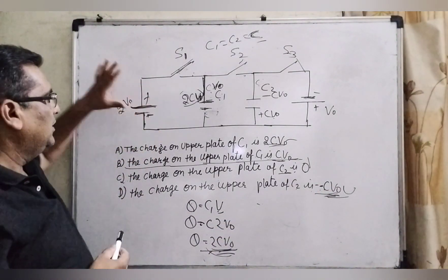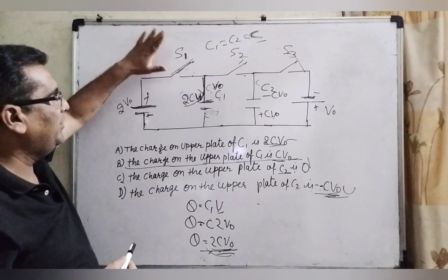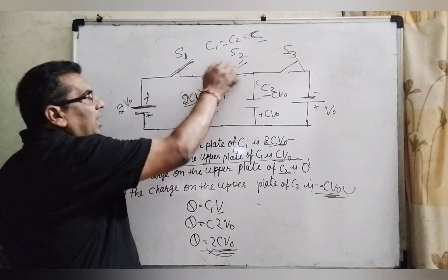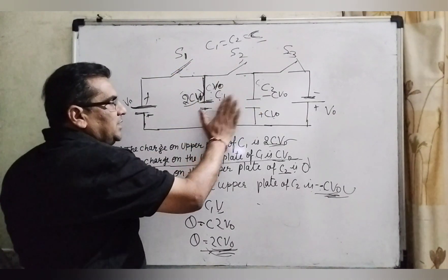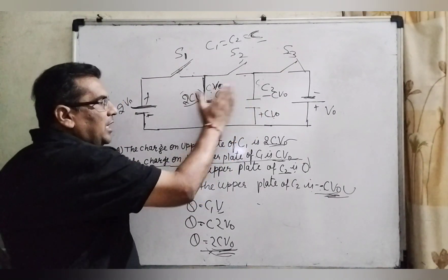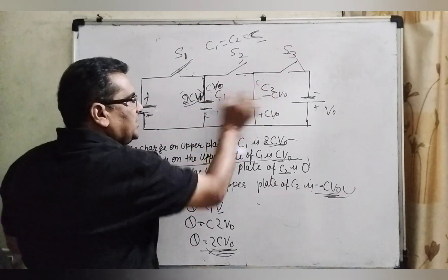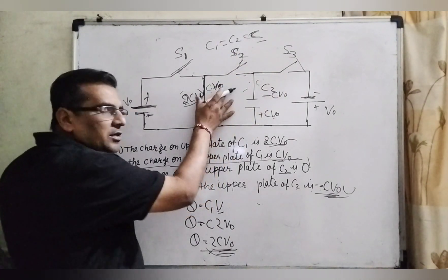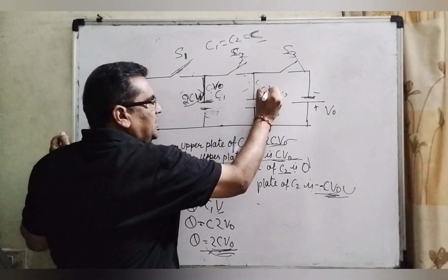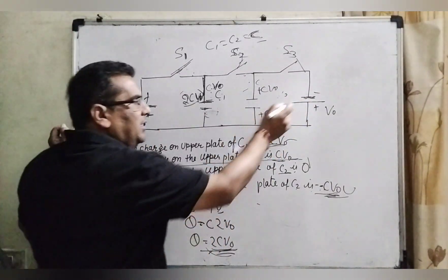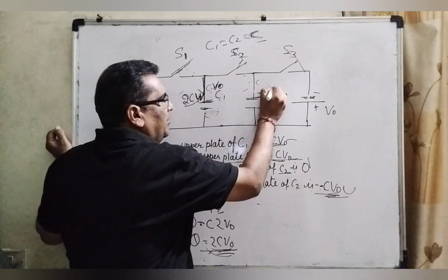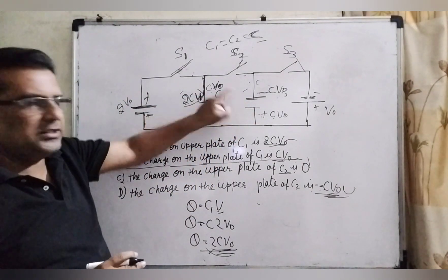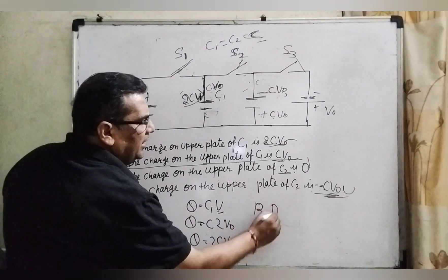Let me repeat again. When the potential is given and S1 is pressed, C1 becomes charged to 2CV0, but that is not stable. When S1 is released and S2 is connected, C1 and C2 become parallel and by the charge distribution law they are equally distributed — 2CV0 becomes CV0 and CV0. When S2 is disconnected, CV0 remains as it is in C1. Then when S3 is connected, for a brief moment C2 becomes 0, but then the plate becomes negative CV0 and positive CV0. This is the stable condition. Therefore, B and D are the correct answers.